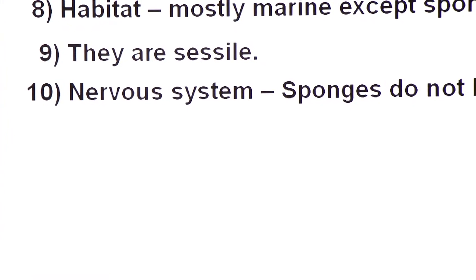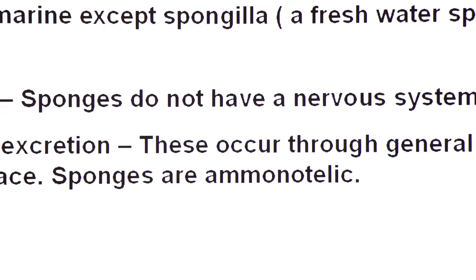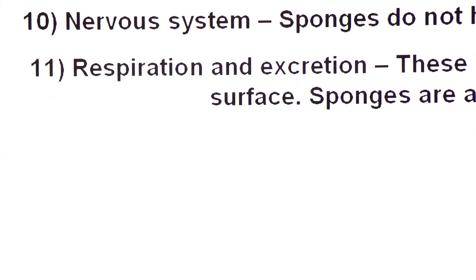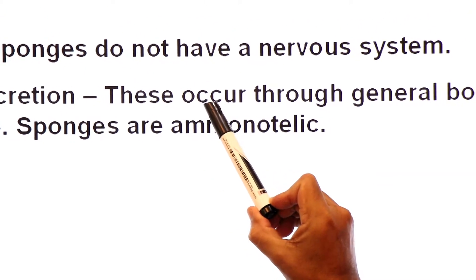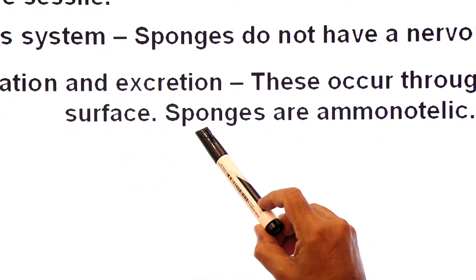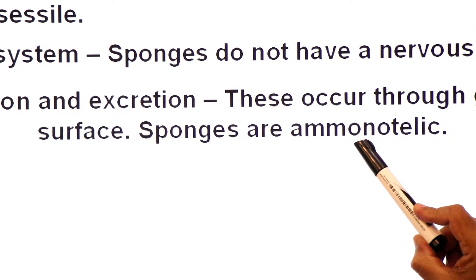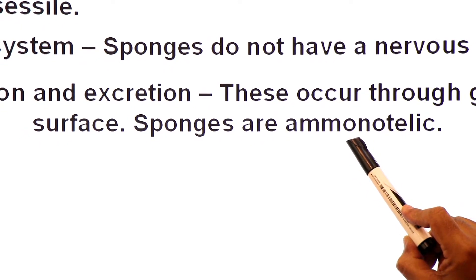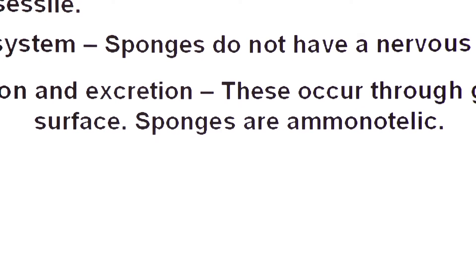Number ten: nervous system is absent in sponges. Number eleven: respiration and excretion in sponges occur through the general body surface. Sponges are ammonotelic — animals which excrete ammonia as a nitrogenous waste are known as ammonotelic.